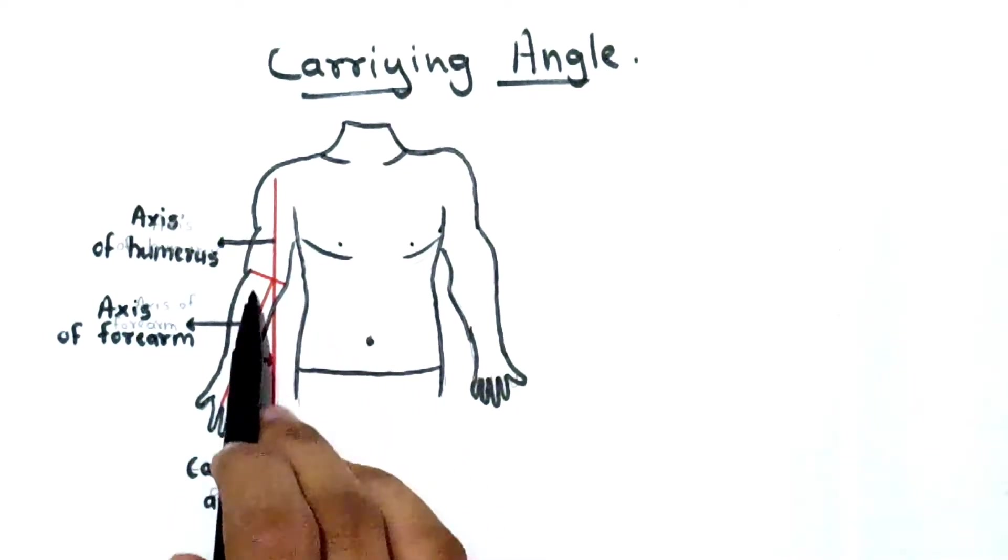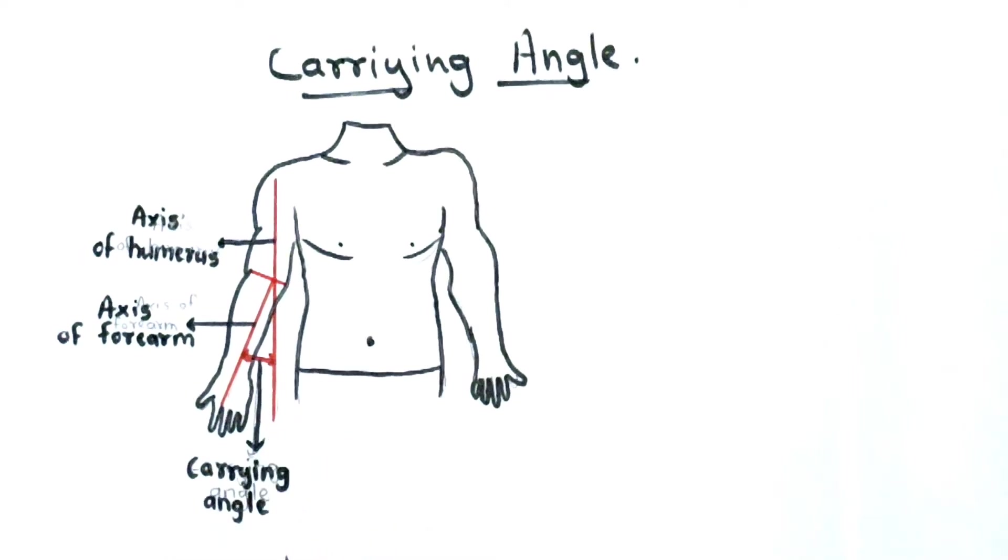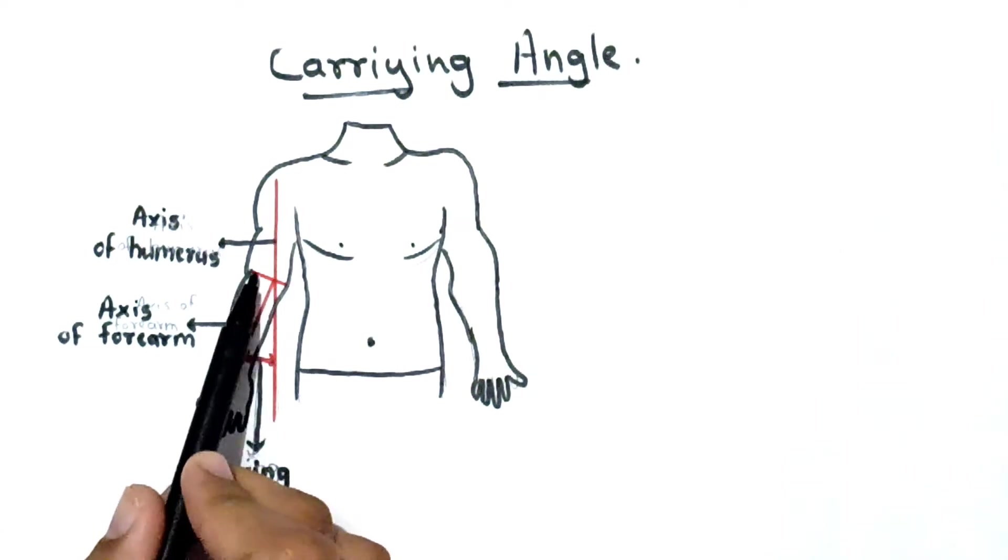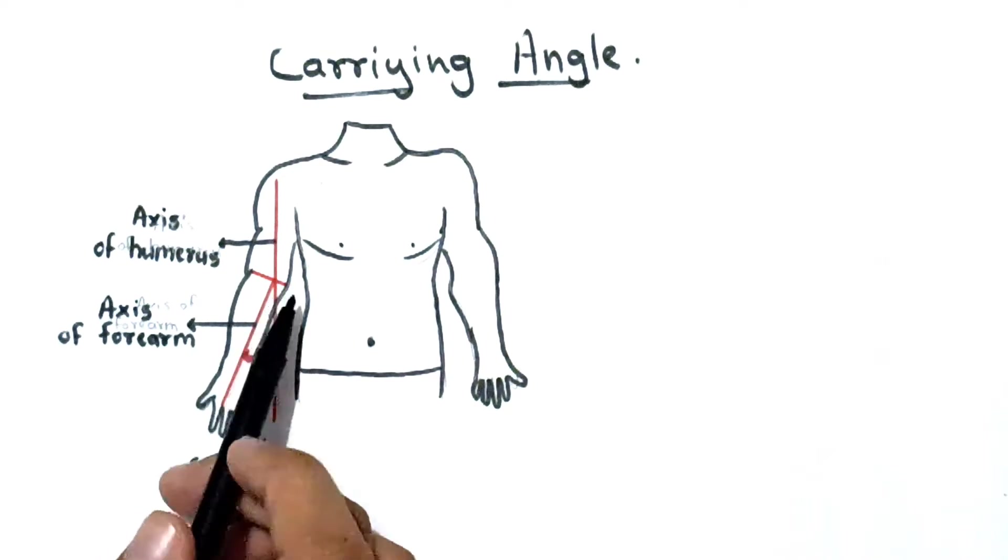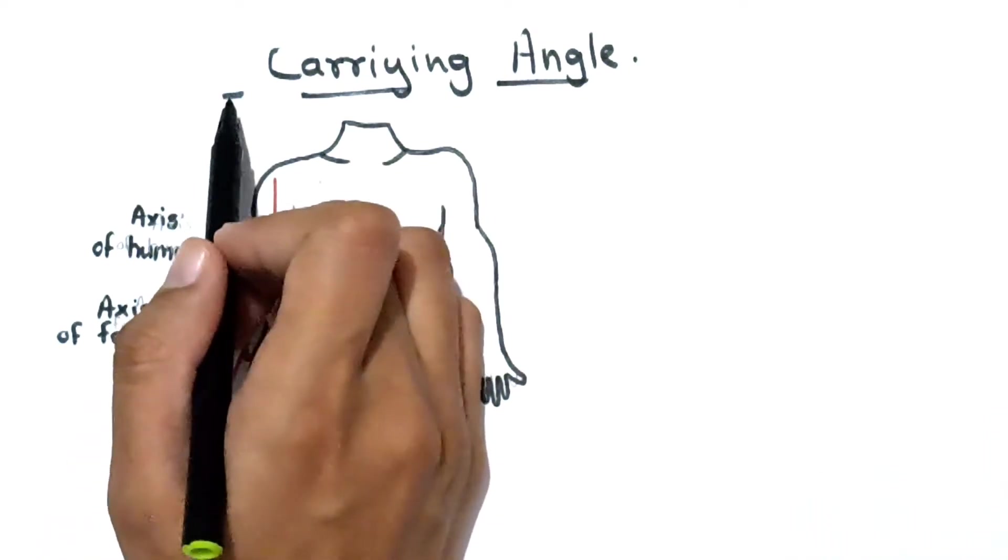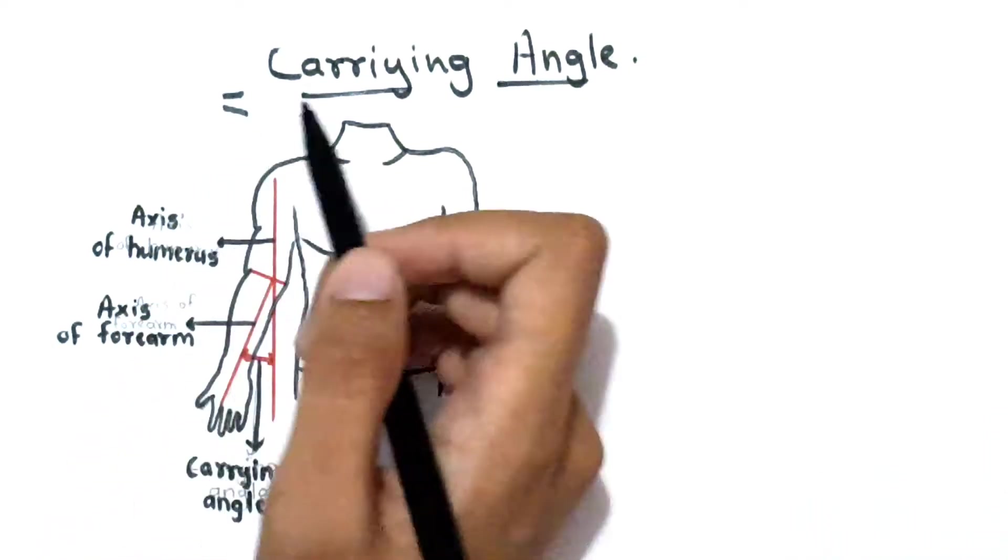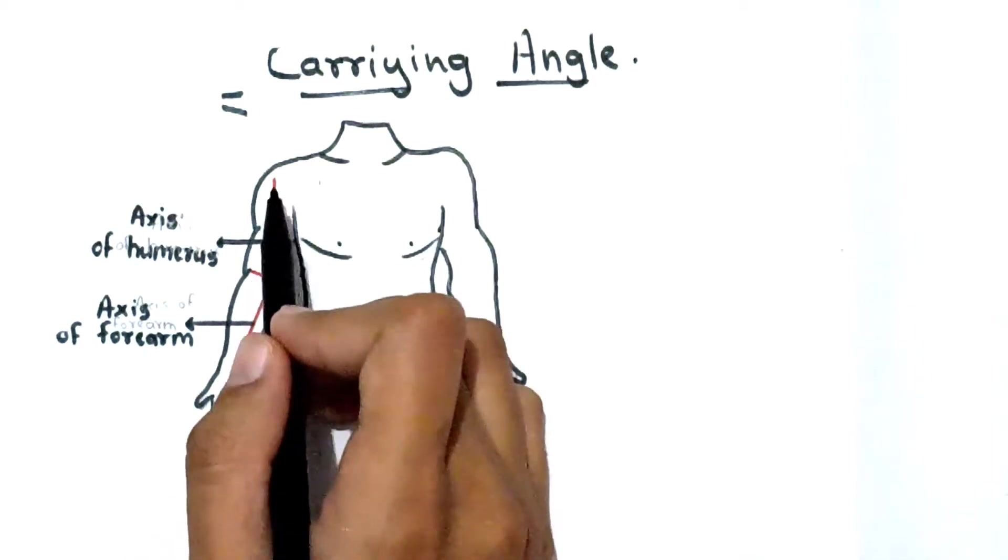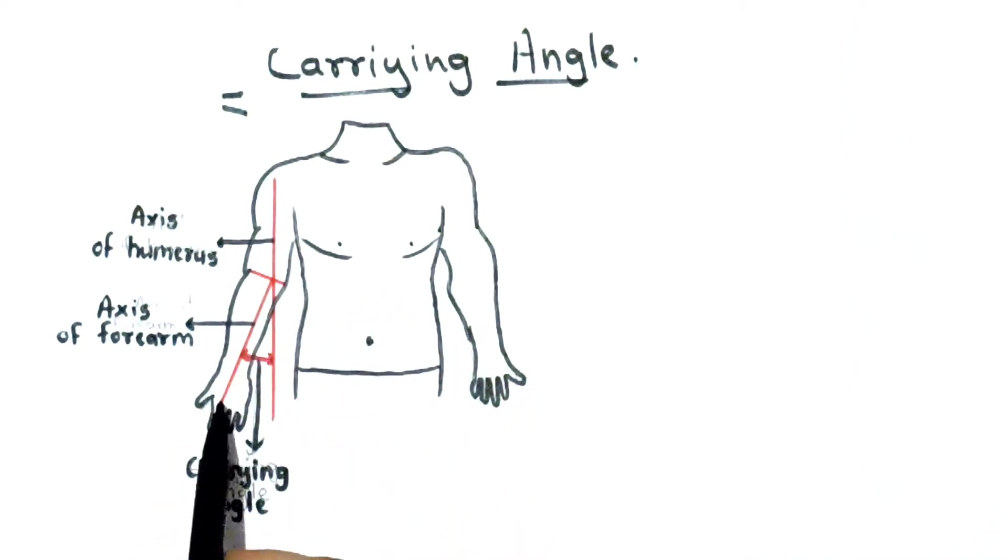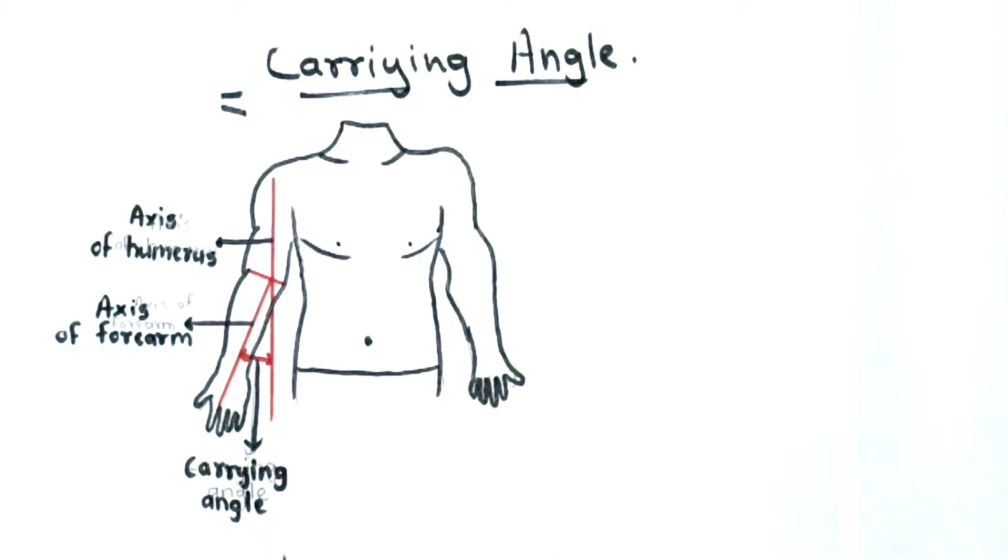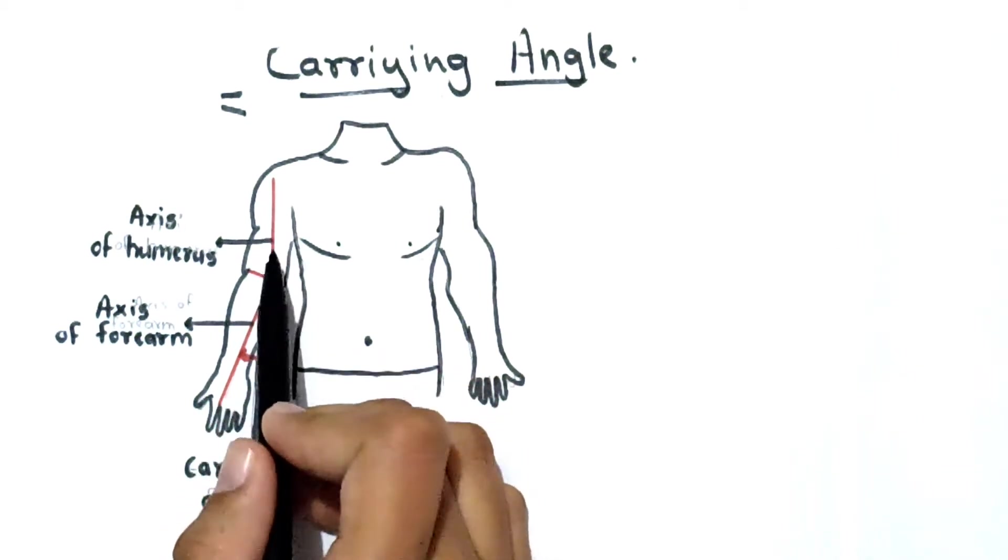Your forearm is not completely straight in a vertical line, it is slightly tilted outwards because the axis of your elbow joint is directed medially downwards. That's why your arm is in straight line but your forearm is tilted outwardly.